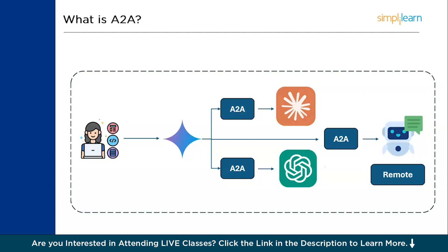Going back to the HR example — you hire a candidate based on their skillset, and they have a LinkedIn profile explaining their experience, skills, and projects. If the requirements match the profile, you go ahead and hire them. In the same way, each agent has its own agent card explaining what it's programmed for, what it can refer to, its sources, and how it gets tasks done. If it suits your requirement, you proceed.